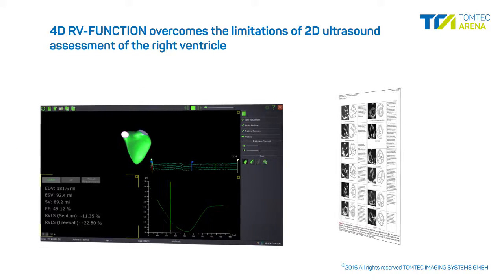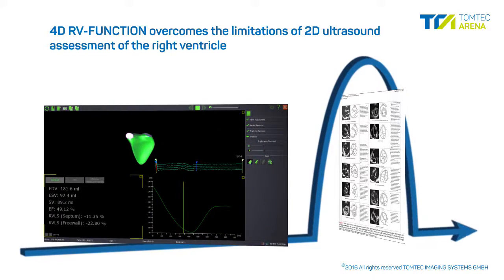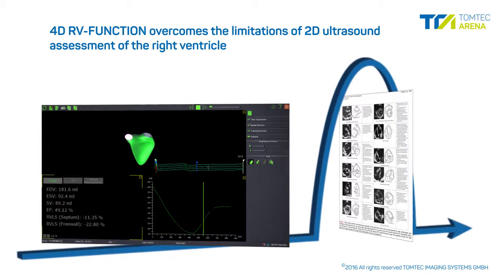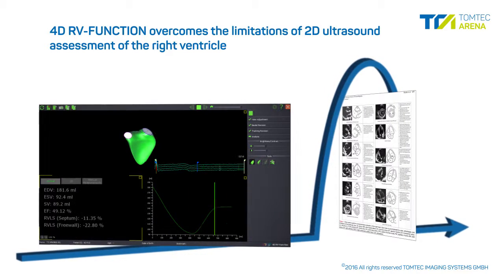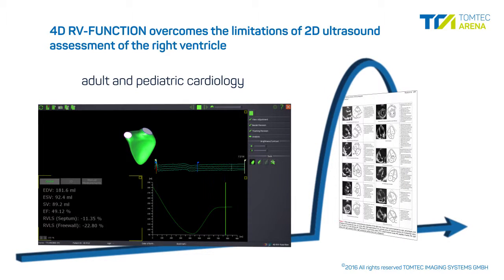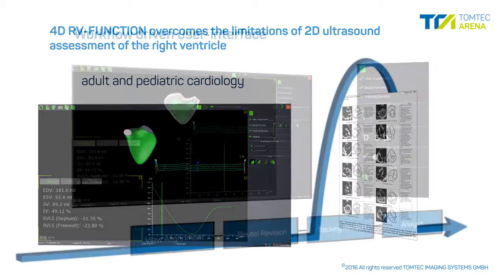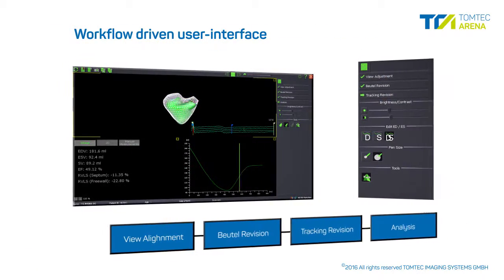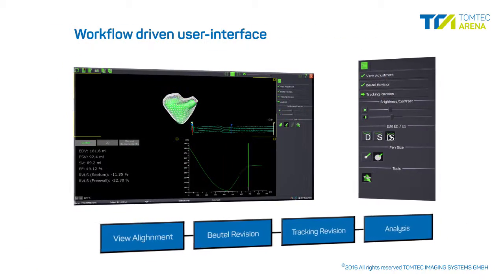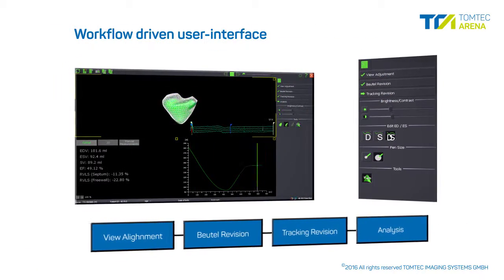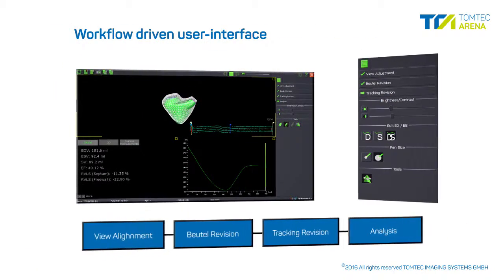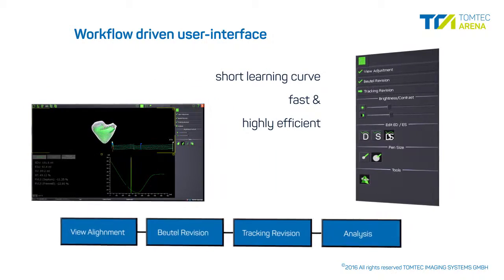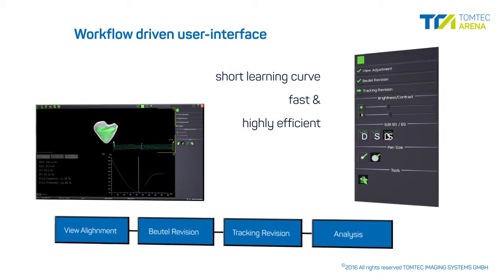4D RV Function overcomes the limitations of 2D ultrasound assessment of the right ventricle in adult and pediatric cardiology. With a coherent workflow-driven user interface, 4D RV Function assures a short learning curve and makes RV assessment fast and highly efficient.